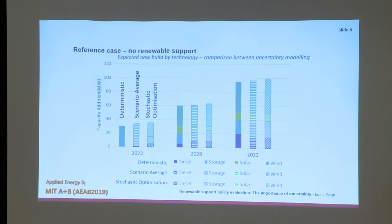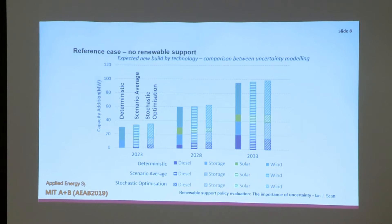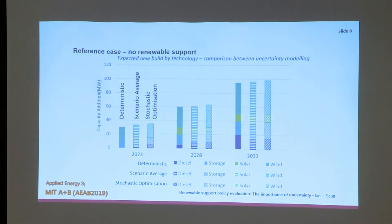These are the model results without any energy policy, running three representative five-year steps. In 2023, under the deterministic assumptions, the model is actually building a little bit of storage and a little bit of wind generation. A policymaker interested in supporting renewables might relax, thinking we don't need any more conventional technology in the short term. Under scenario analysis, some scenarios show some diesel technology, but it seems unlikely. But under stochastic optimization — where we have to make one set of decisions for all possible futures — we do actually get a conventional technology. So there is something for a policymaker to look at.